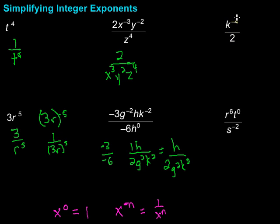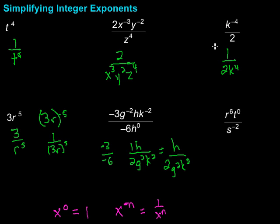Now let's look at this one: we've got k to the negative fourth over 2. I need to flip that down to the bottom, so it's going to become 2 times k to the fourth on the bottom. But what is there on top? There's a 1 sitting there — the same way that when we had t to the negative fourth and flipped it down, we had a 1 on top. Sometimes people get confused and want to push that back up to the top — no, we can't do that. Remember, it's getting flipped to the bottom, so it's 1 over that amount.